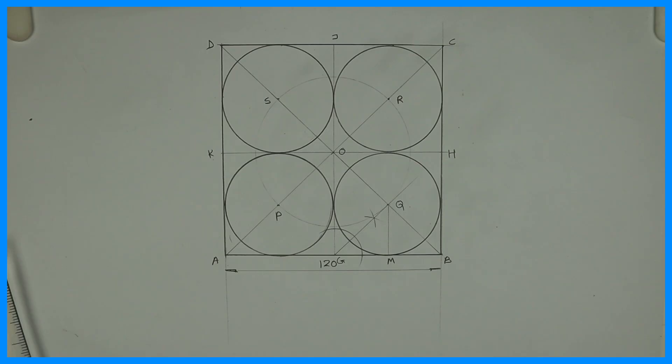So we are done with four circles inside a square, touching two sides and two other circles. Thank you.